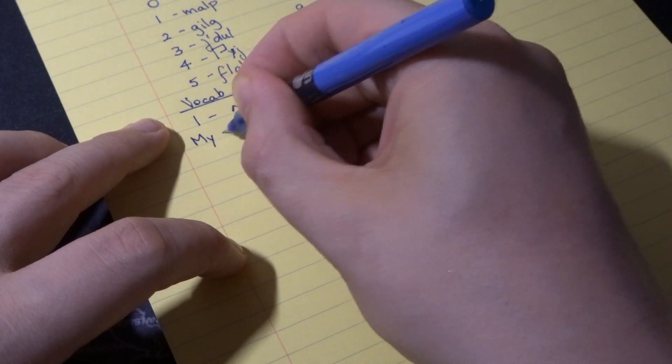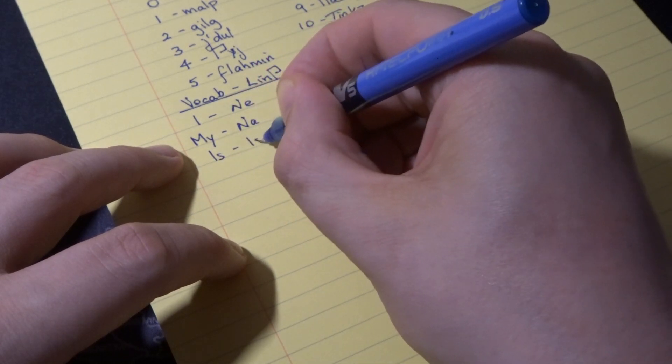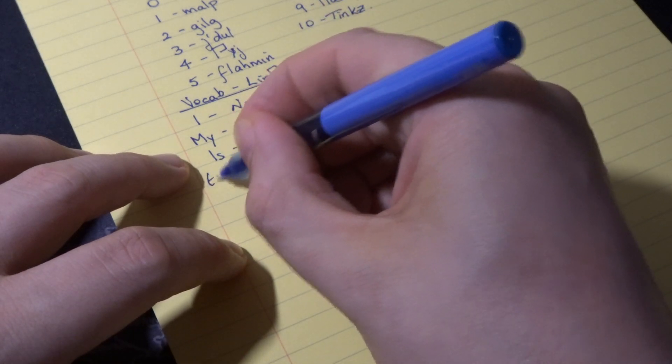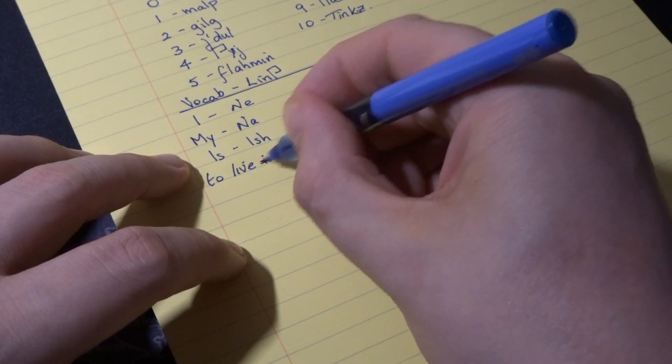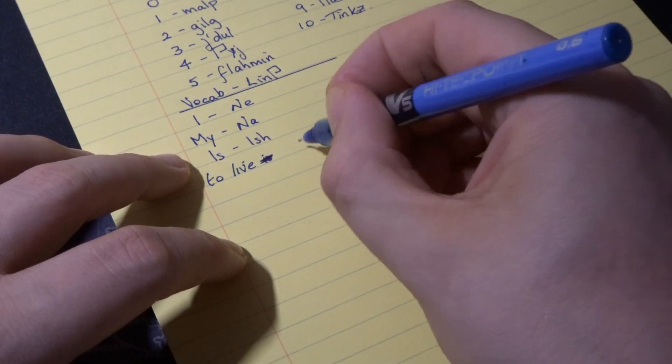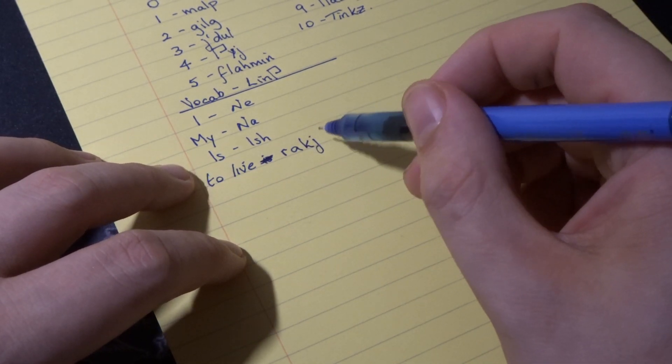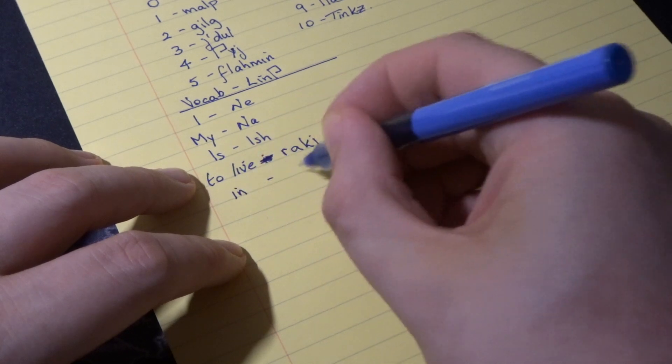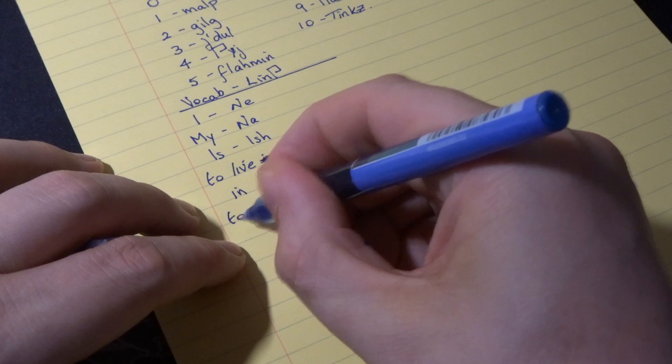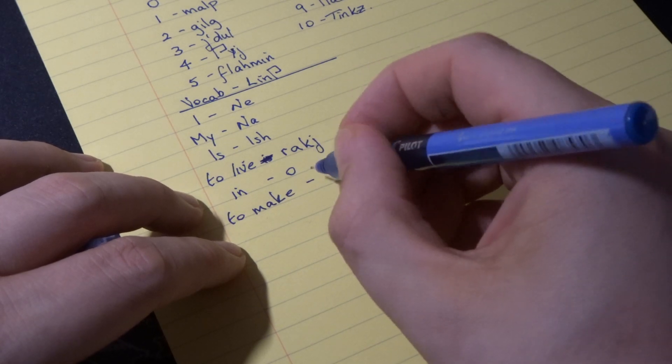I is ne. My is na. Is is ish. To live is rac. Sorry, I'm writing what I'm saying. To live, the ending is j from action. And it's o. To make is bngju.